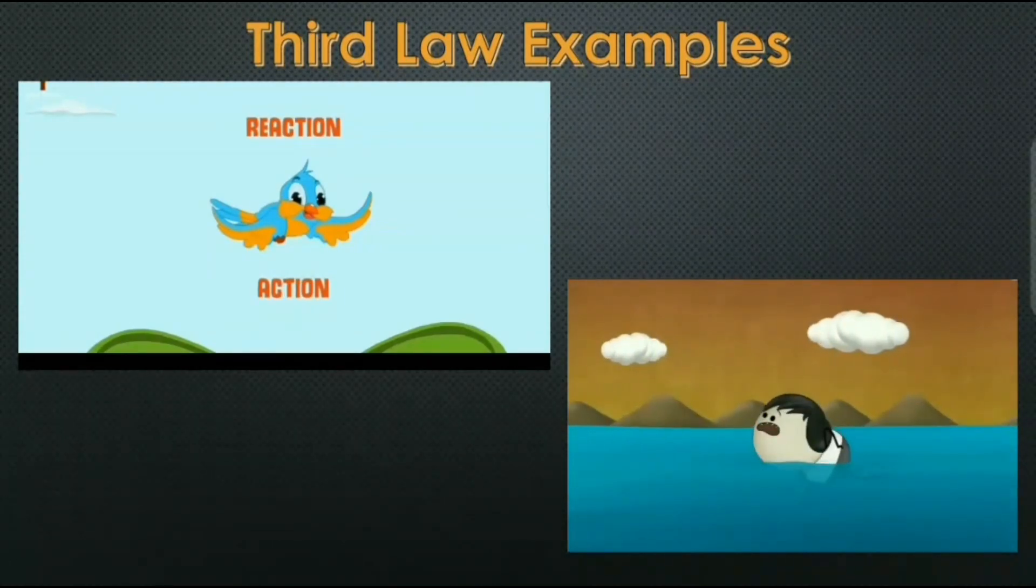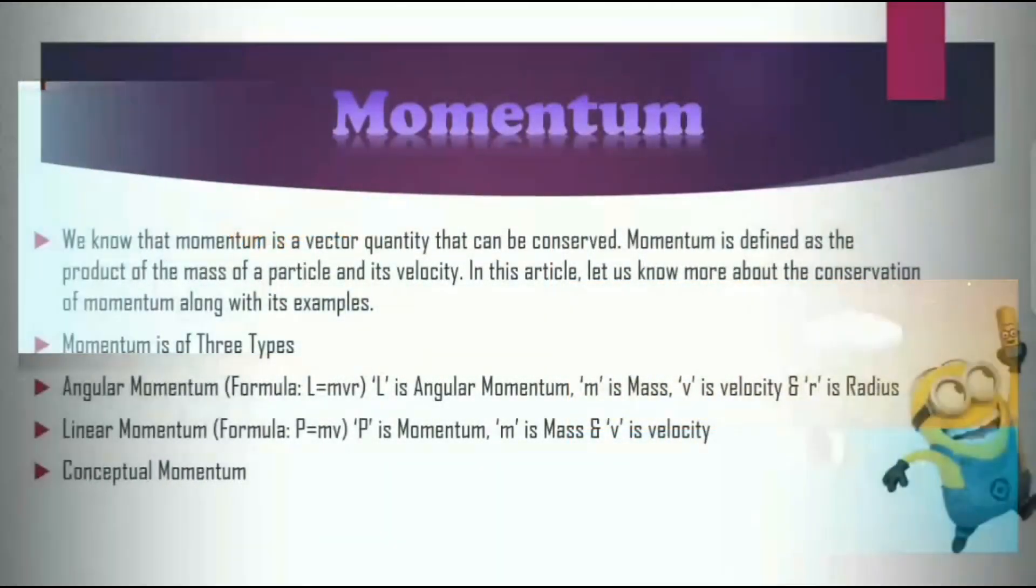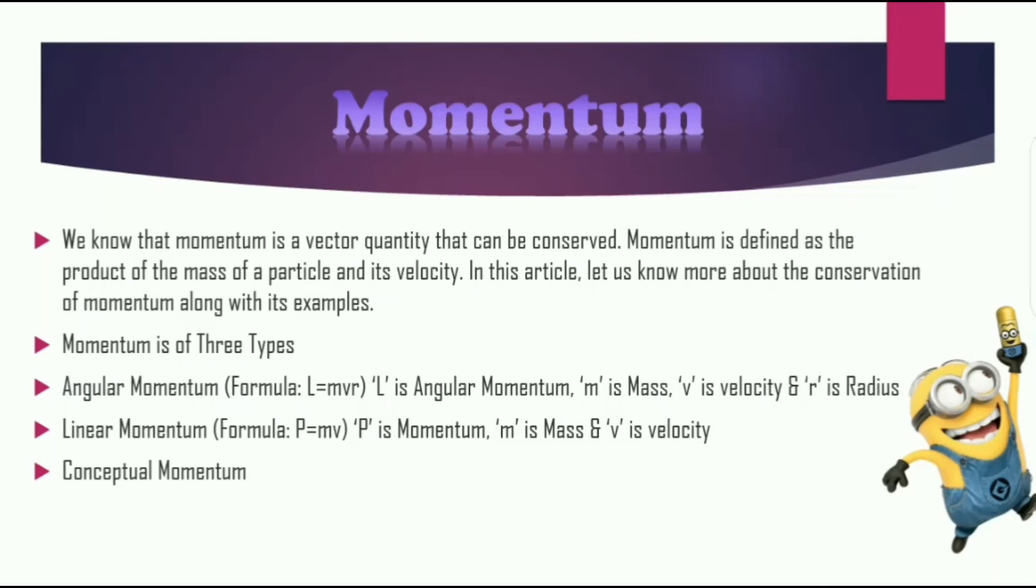Now we are moving on to momentum. Momentum is a vector quantity that can be conserved. Vector quantity means it is a quantity that depends on both magnitude and direction. The formula to calculate momentum is p equals mv, where p is momentum, m is mass, and v is velocity. There are three types of momentum: angular momentum, linear momentum, and conceptual momentum.